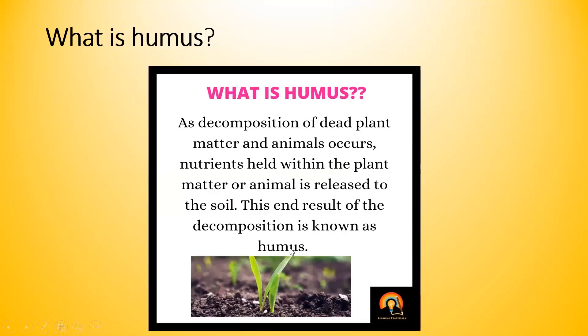What is humus? It's a new term. As decomposition of dead plant matter and animals occurs, nutrients held within the plant matter or animal are released to the soil. This end result of the decomposition is known as humus. So basically, humus is the dead remains of plant matter and animals.